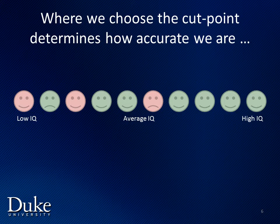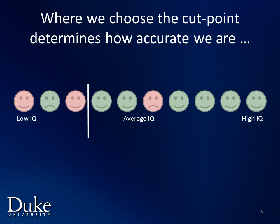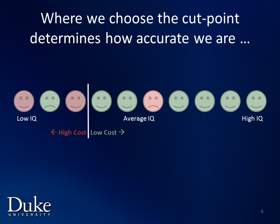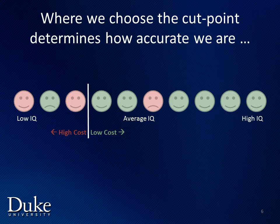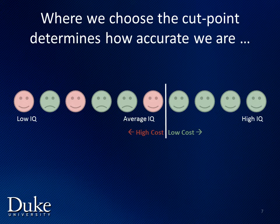If we're going to use IQ to classify individuals, where we put our cut point for deciding someone is high cost or low cost determines how accurate we are. If we put our cut point here and say that individuals with lower IQ are classified as high cost and individuals with higher IQ are classified as low cost, we correctly classify two high cost individuals and six low cost individuals, but we misclassify one low cost and one high cost individual. In contrast, if we move the cut point to here, we correctly classify all high cost individuals, but several more of our low cost individuals are misclassified.